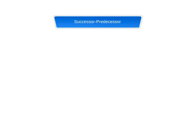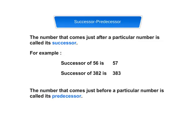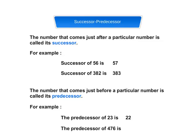Successor and predecessor. The number that comes just after a particular number is called its successor. For example, the successor of 56 is 57, and the successor of 382 is 383. The number that comes just before a particular number is called its predecessor. For example, the predecessor of 23 is 22, and the predecessor of 476 is 475.